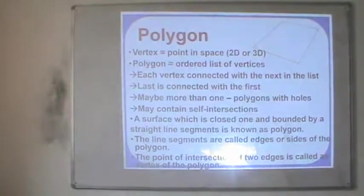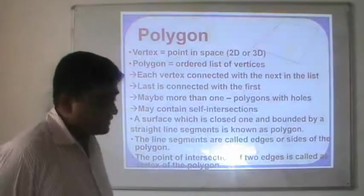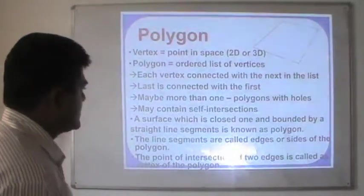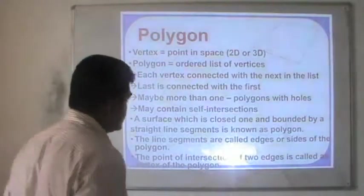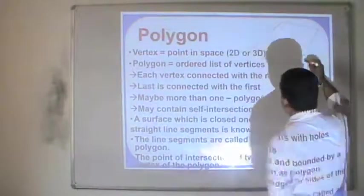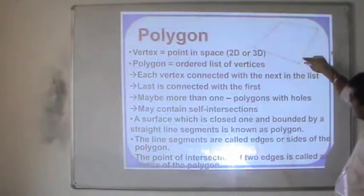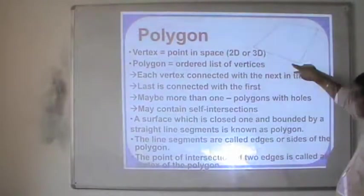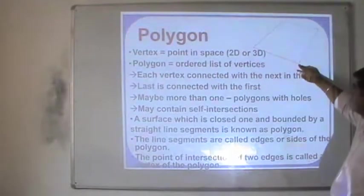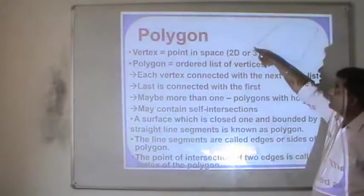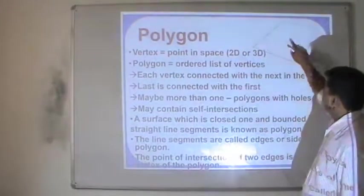The line segments are called edges or sides of the polygon. The point of intersection of the two edges is called the vertex of the polygon. So here if you see this particular point, this and this are meeting here — this point is called the vertex. These are the edges.